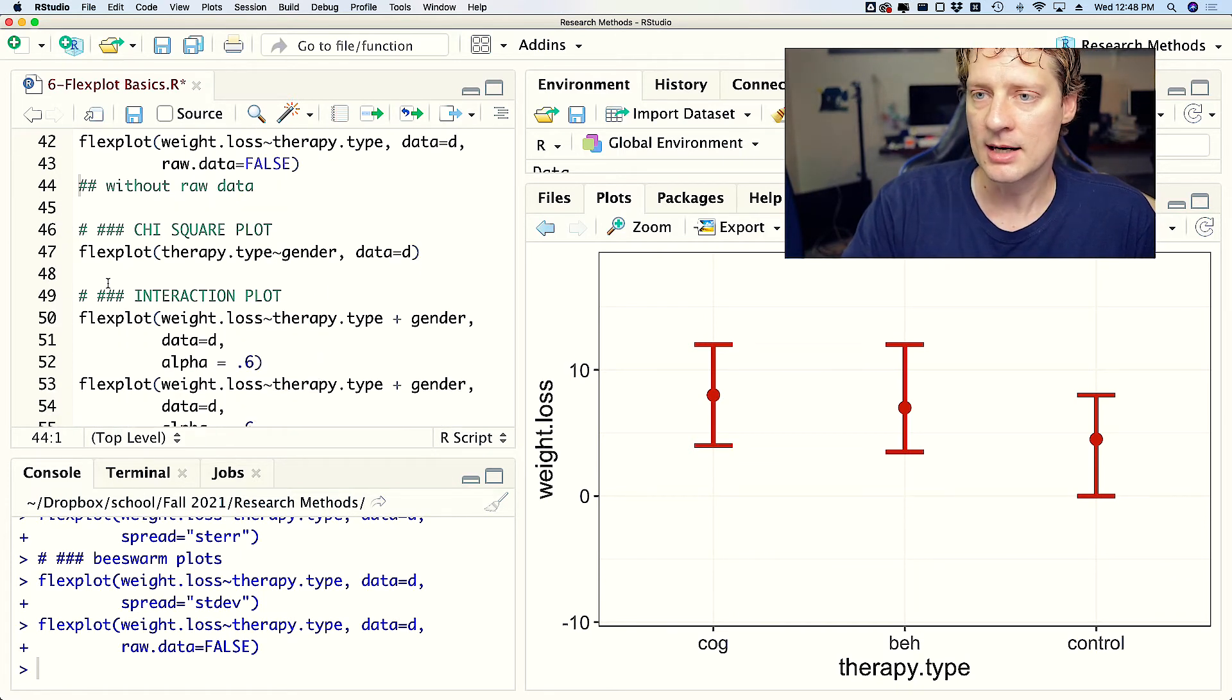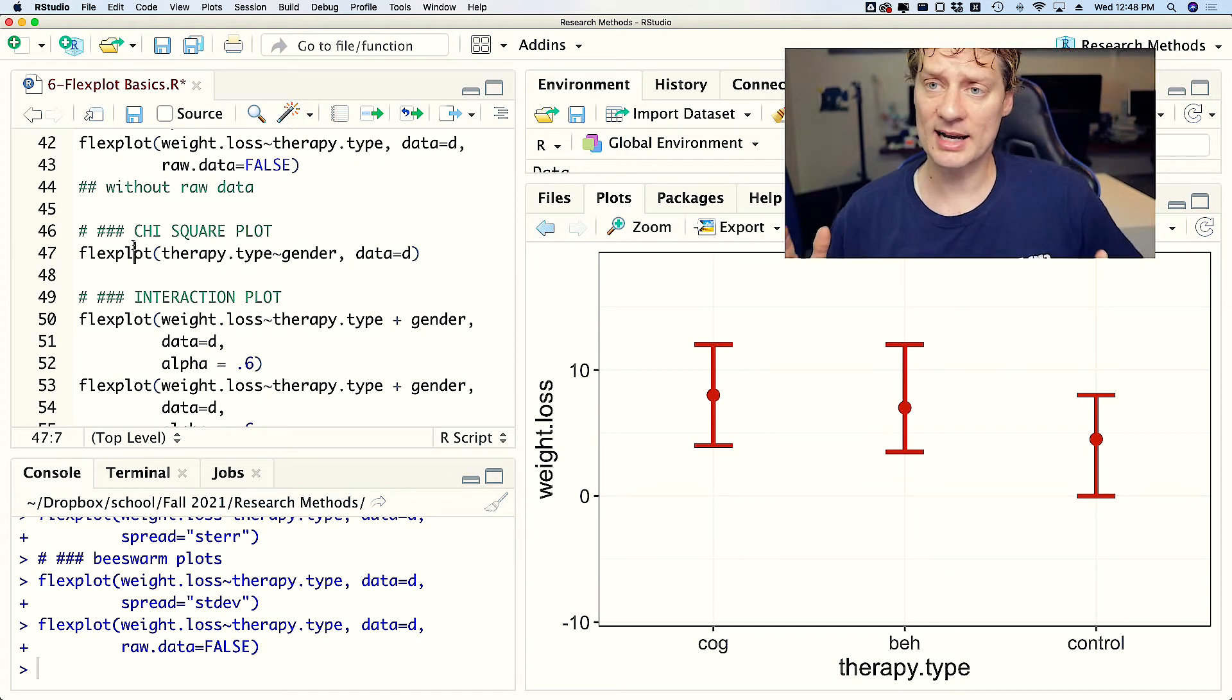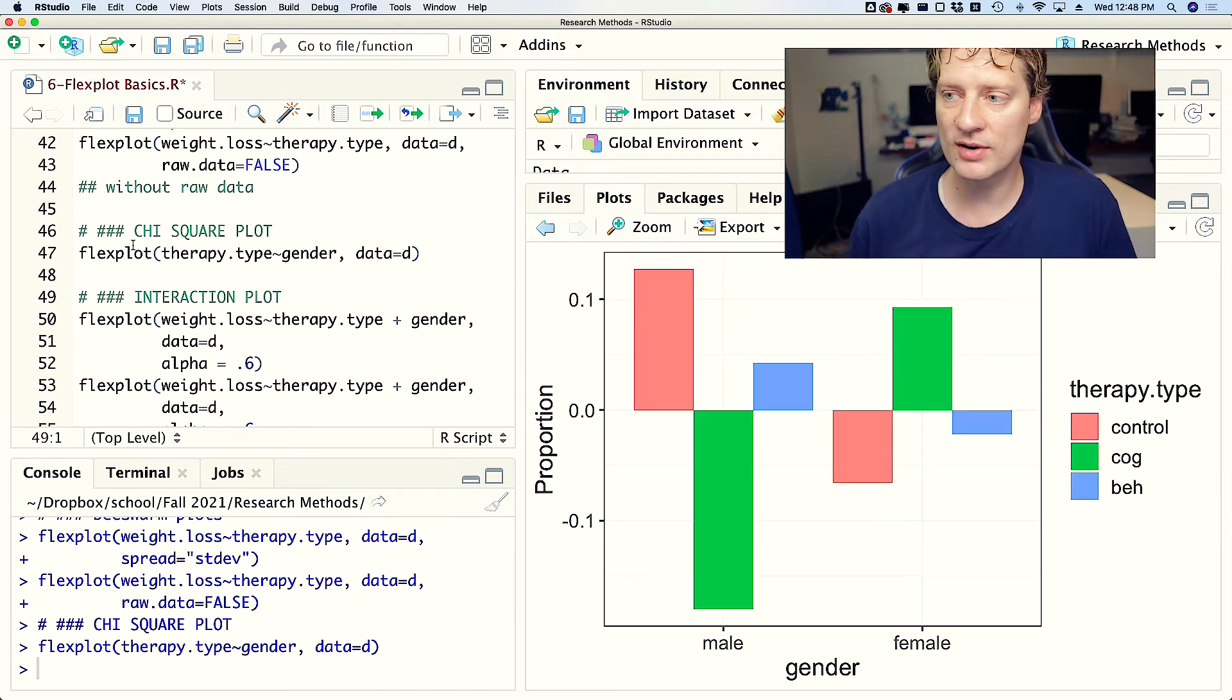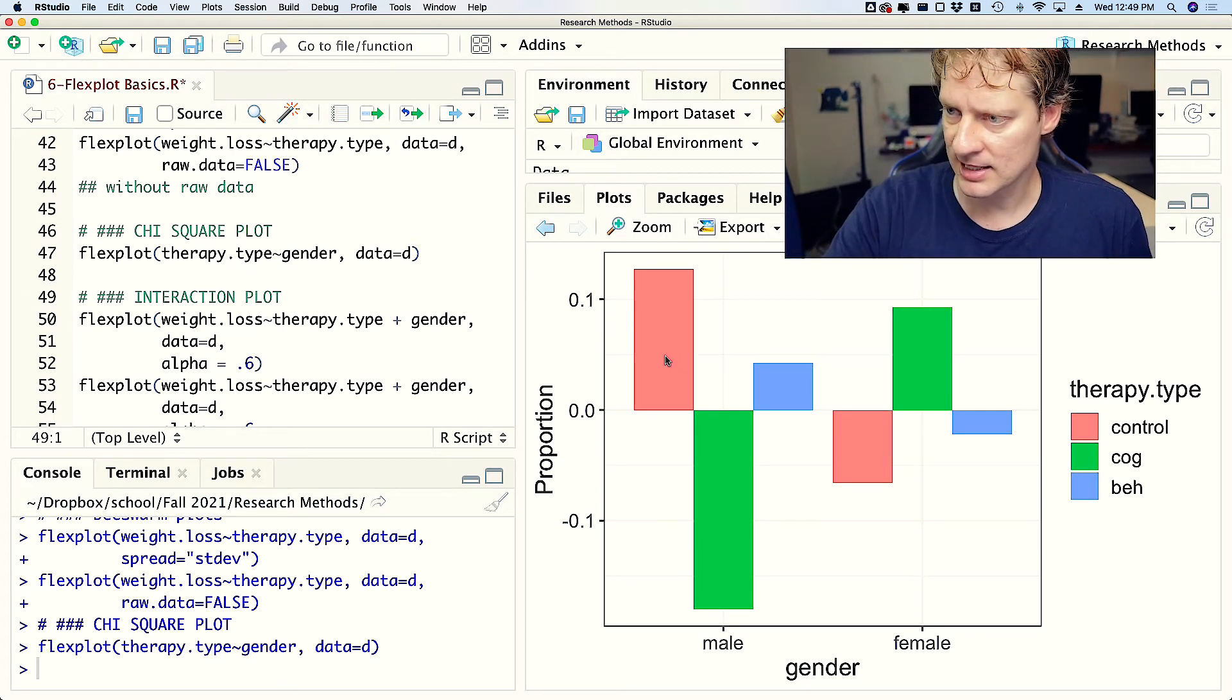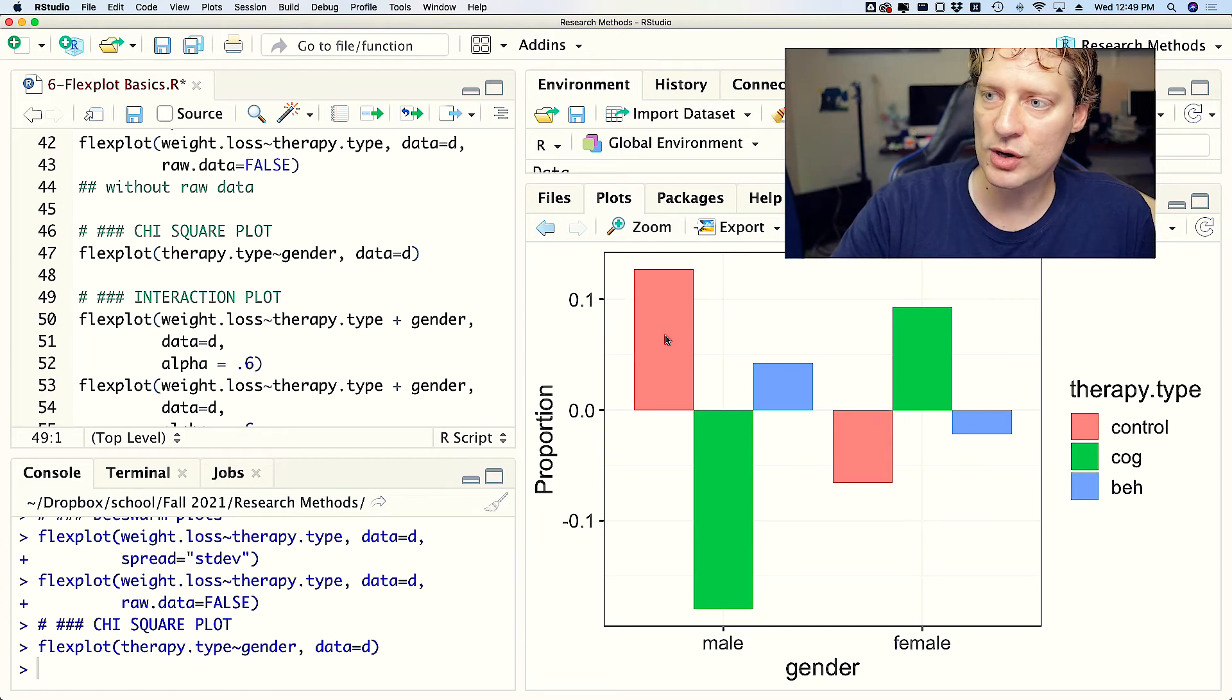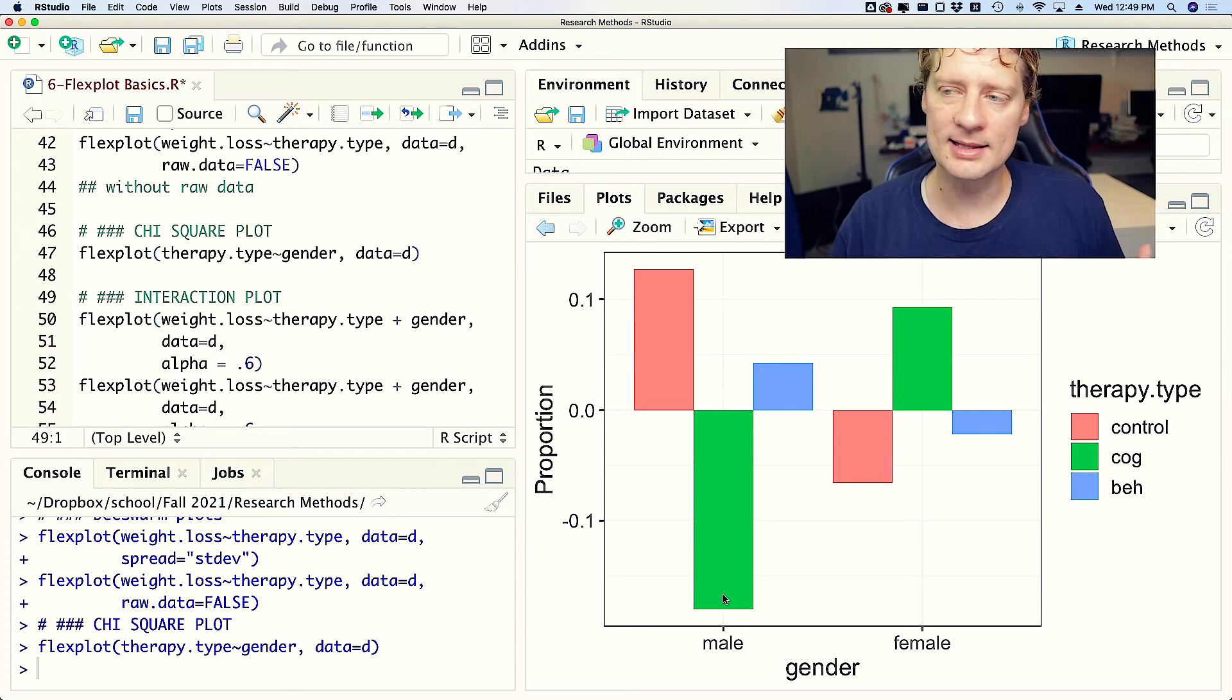Another type of plot we can do is what you might consider like a chi-square plot that plots two categorical variables against one another. This is what we call an association plot, which the height of the bar represents the deviation from what you would expect by chance. So what this is telling us is that there are more males in the control condition than we would expect by chance, about 12 percent more males. In the cog condition, we have about maybe 20 percent fewer males than we would expect by chance. Now it just so happens that these were randomized, so these are minor fluctuations that you shouldn't worry about.